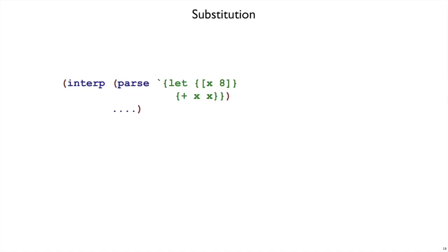Interpreting a let expression is going to be similar to interpreting a function call in that interpreting will rely on substitution. That is, the way that we interpret this let form where we have x bound to 8 is that we can substitute 8 in place of x and then evaluate or interpret the plus 8 8. So our interp for let forms is going to end up calling substitution.